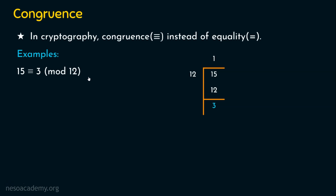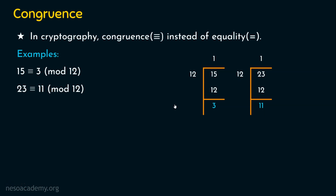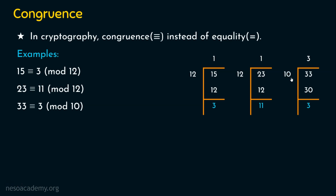Another example: 23 is congruent to 11 mod 12. When 23 is divided by 12 — 1 times 12 is 12 and the remainder is 11. So 23 hours means 11 PM. Now let's take other numbers: 33 is congruent to 3 mod 10. When 33 is divided by 10 — 3 times 10 is 30 and the remainder is 3. This is a valid congruence. The number on the left is divided by the modulus and the remainder gives the right-hand value.